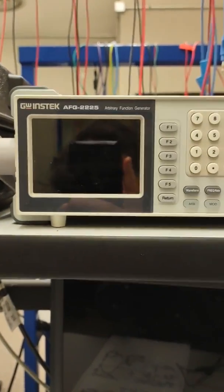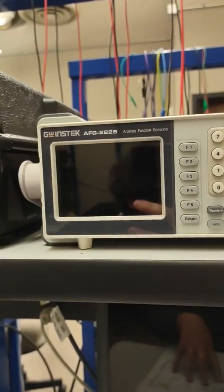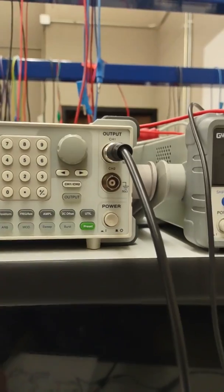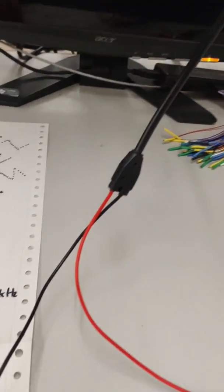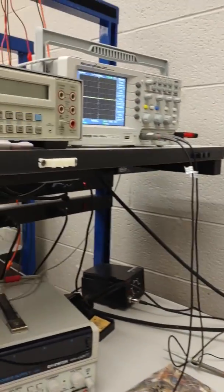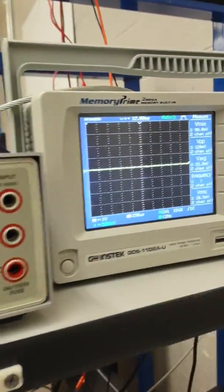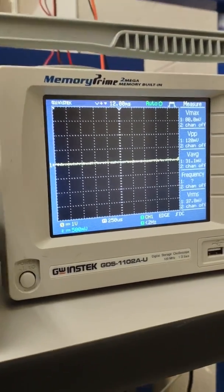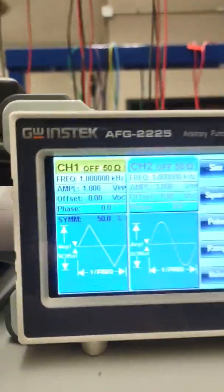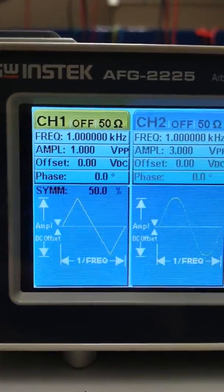This is a function generator. You can generate AC signals. Let's turn it on here with this power switch. We're using a function generator probe, which you can follow here, which I have connected to the oscilloscope on channel one. Channel one is currently not showing anything because the function generator just turned on.